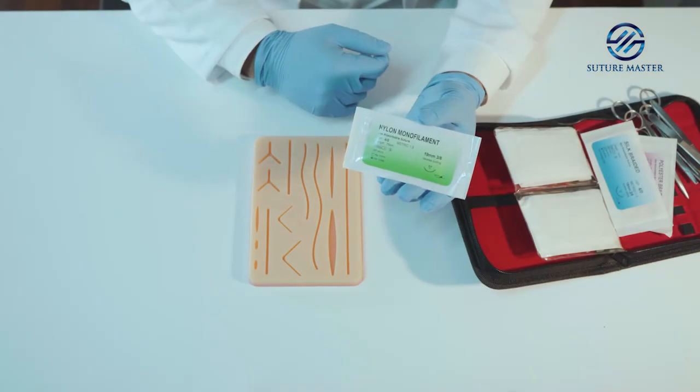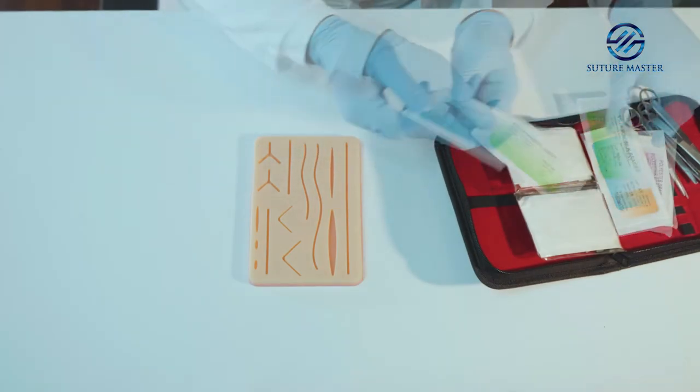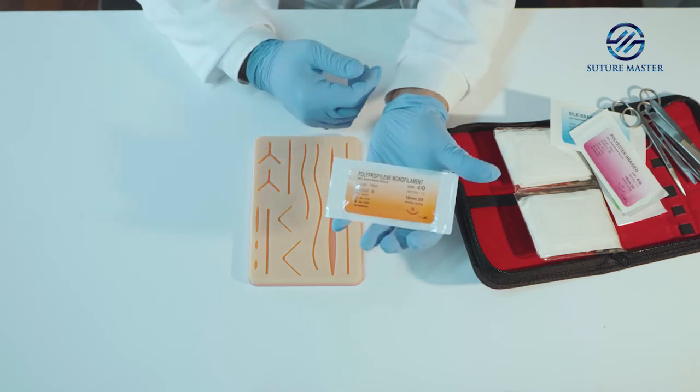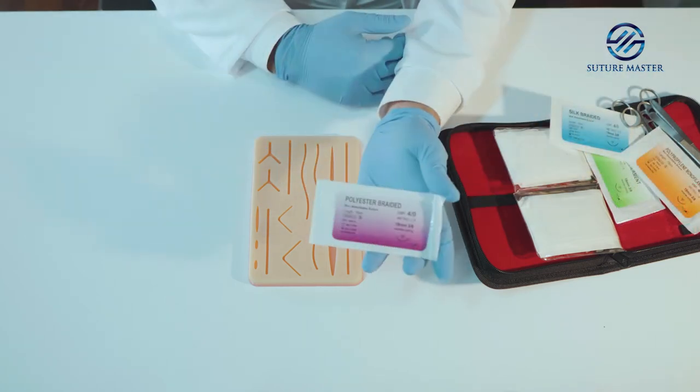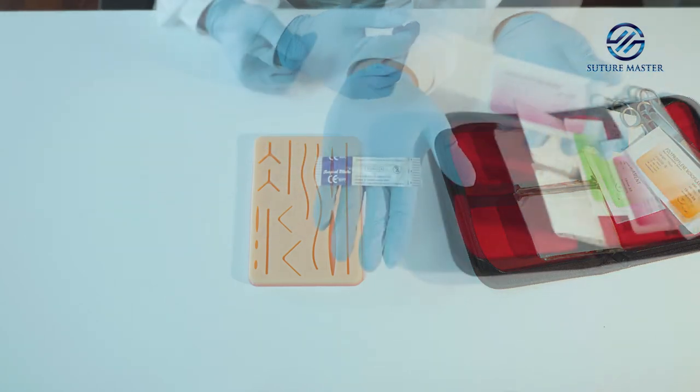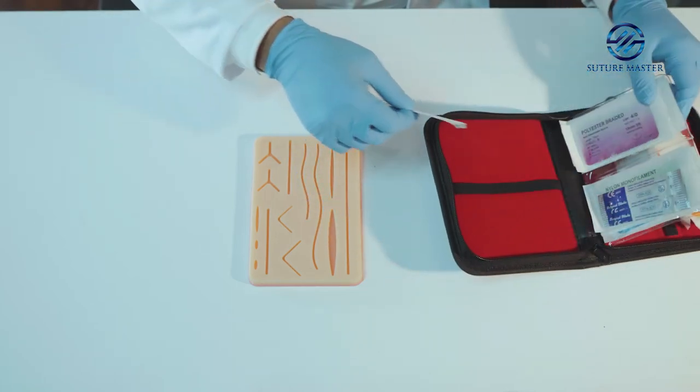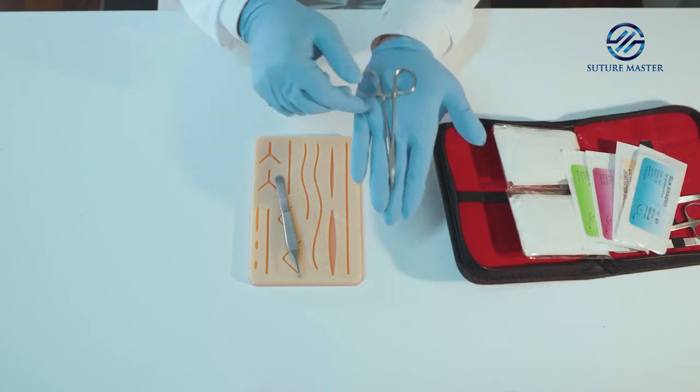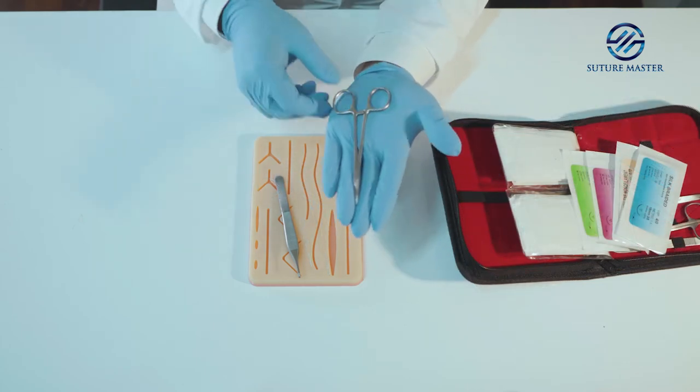The suture master kit also comes with nylon, silk, polypropylene and polyester suturing threads, three scalpel blades, one scalpel holder, one curved cali forceps, and a pair of gloves.